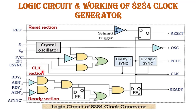The second is the clock section. The clock section produces three output signals: the oscillator output signal, the peripheral clock signal, and the clock signal. It consists of a number of components: an external crystal oscillator, a 2-to-1 multiplexer, a divide-by-3 counter, a divide-by-2 counter, and an inverting buffer.